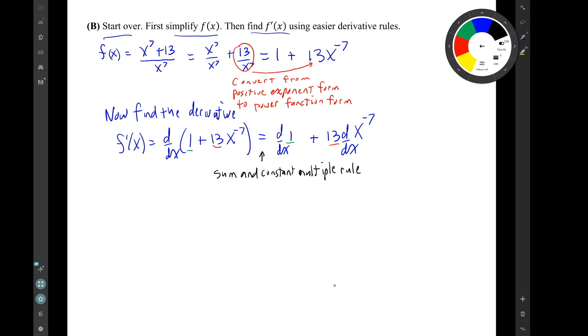So in this first step, we use the sum and constant multiple rule. Notice that our multiplicative constant, 13, slips right through the derivative symbol. The other number, 1, is not a multiplicative constant. It's a constant function. It has to stay inside the derivative. All right, the next step, we just use our basic derivative rules.